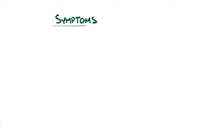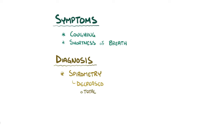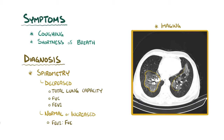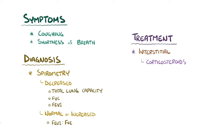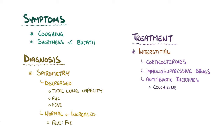Symptoms of interstitial restrictive lung disease include a cough and progressively worsening shortness of breath. Diagnosis is usually done with spirometry, which shows a decreased total lung capacity, FVC, and FEV1, but a normal or increased FEV1 to FVC ratio. Imaging shows hazy whiteness in multiple lung fields called diffuse ground glass opacities. Treatment often includes corticosteroids and other immunosuppressive drugs, as well as antifibrotic therapies like colchicine.